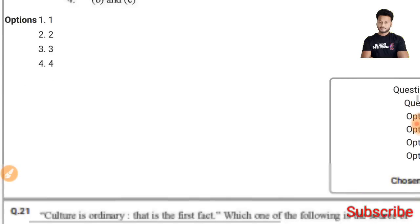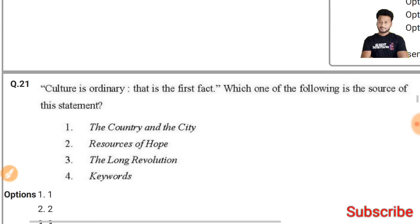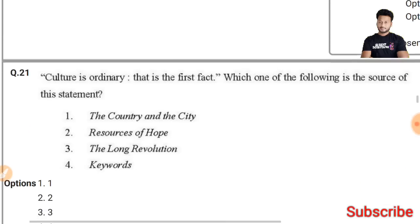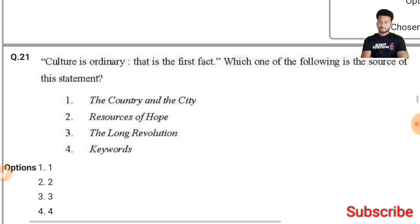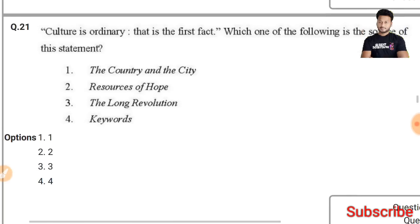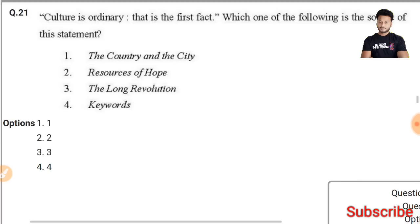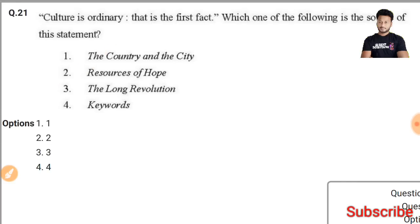Question 21: 'Culture in ordinary' — which of the following is the source of this statement? The source is 'Resources of Hope' by Raymond Williams — the second option is the right answer.